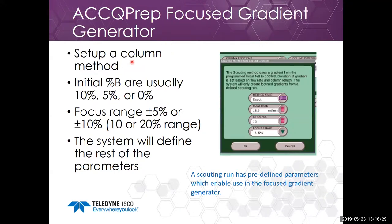When you set up a column you set up a scouting method. The initial percent B is usually 0, 5, or 10. You set your focus range and the system defines the rest of the parameters. The scouting run has predefined parameters which enable use in the focus gradient generator. You can have several scouting methods for a column based on needs. Any column can act as a scout, so if you don't have a 4.6 mm column you can still use your prep column. Zero percent initial is used for an AQ-type column or if you have a pre-mixed solvent system. We use a focused gradient to allow for slight differences in columns and errors in touching the screen, and some ionizable compounds tend to move around on any of these focused gradient methods.